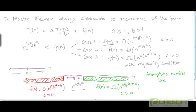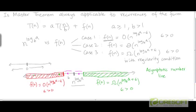Let's take a couple of examples — one each from each gap — functions that fall into neither of the three cases. The red region is case 1, the black point is case 2, and the green region is case 3. There are plenty of functions that could fall into these gaps, belonging to none of the three cases of the master theorem.